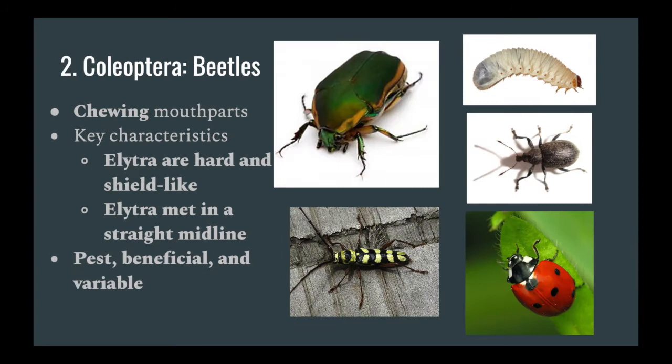Next is Coleoptera, or beetles. Beetles' elytra, or their outer wings, are hardened and solid like a shield that help protect their insides and abdomen. The elytra cover the inner wings and meet in a straight midline. Coleoptera serve many different ecological roles, and these roles will even vary from immature to adult form.